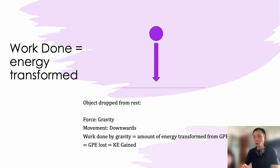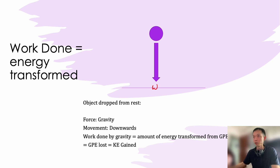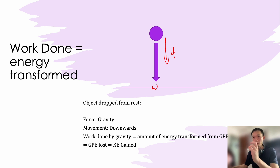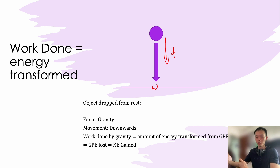Let's look at a simple example. If you have an object dropped from a certain height, it's going to lose GPE and gain KE — GPE is being converted to KE. If you think about the forces acting on it, there is weight, which is gravitational force, and as that force acts on it the object moves downward through a distance. So the work done by gravitational force refers to the amount of energy converted from GPE to KE.